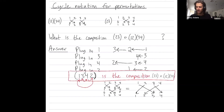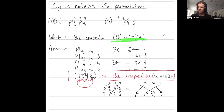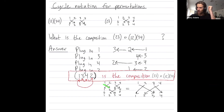I did that algebraically, writing down every step, but you're going to get fast at doing this without writing everything down. Our answer agrees with the composition we saw before by stacking permutations: one goes to three, three goes to four, four goes to two, and two goes back to one.